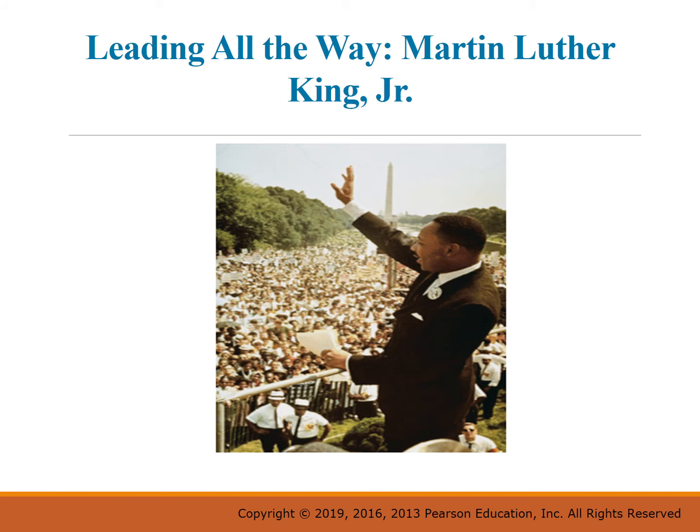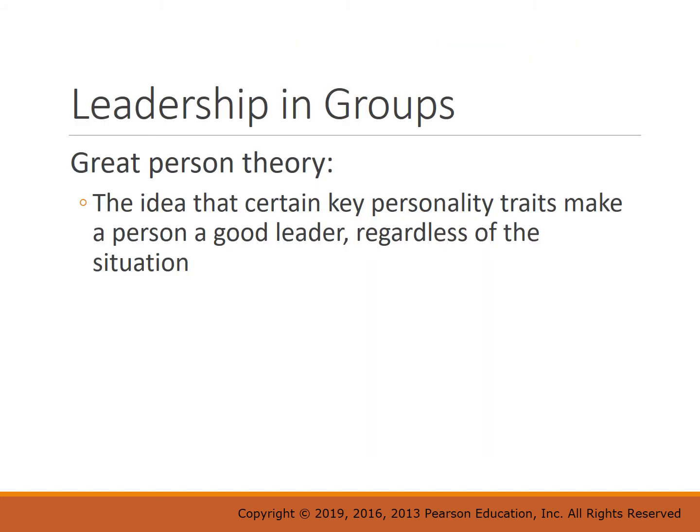Now let's talk about leadership, which has a huge effect on group decision making. Martin Luther King is considered a transformational leader and also a great example of the great person theory — the idea that certain key personality traits make a person a good leader regardless of the situation. But in social psychology, we always remember that the situation or context is also very important.